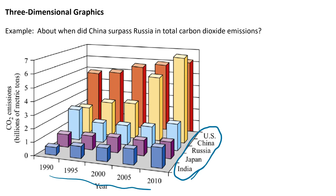3D graphs can sometimes be difficult to read precisely. For example, if I draw a straight line it looks like it's at 5.5, but following the line over it's actually less than five, so it's hard to tell exactly where these bars are actually reaching.